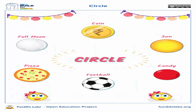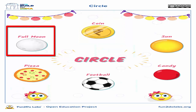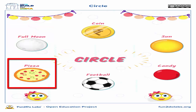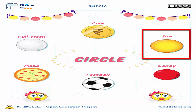What are similar objects to circle? The coin is similar to circle. The moon is similar to circle. The pita is similar to circle. The football is similar to circle. The sun is similar to circle.